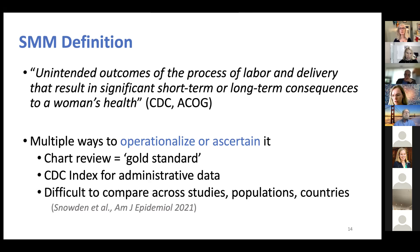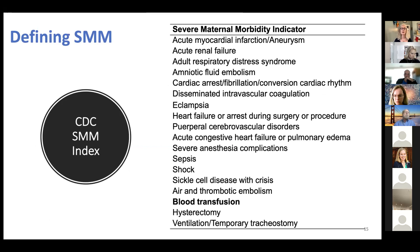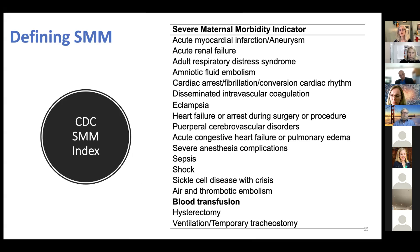Because there is no consensus definition or ascertainment method, it is somewhat difficult to compare across studies and populations, much less countries. The CDC index includes a whole slew of ICD diagnostic and procedure codes to find cases. I highlight blood transfusion because about half of cases are blood transfusion only — partly to capture hemorrhage, which is not captured well in other codes — but we don't know volume, so it may overestimate. We therefore look at the index overall as well as without transfusion-only cases.